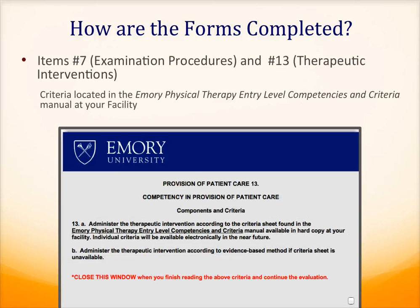There are two exceptions for where to find criteria. On items number 7, which is titled Examination Procedures, and item number 13, which deals with therapeutic interventions, you will notice that when you click on the blue text, a pop-up opens that directs you to the Emory Physical Therapy Entry Level Competencies and Criteria Manual, which is available in hard copy at your facility.